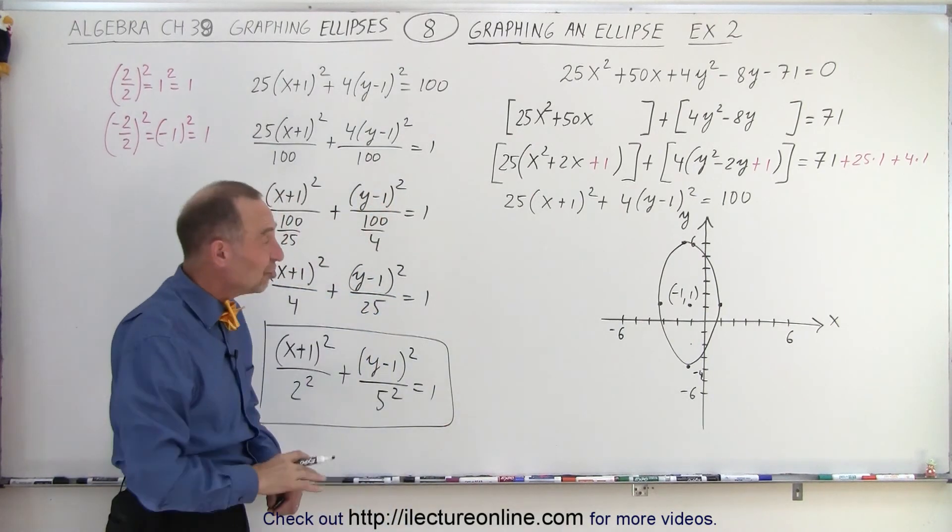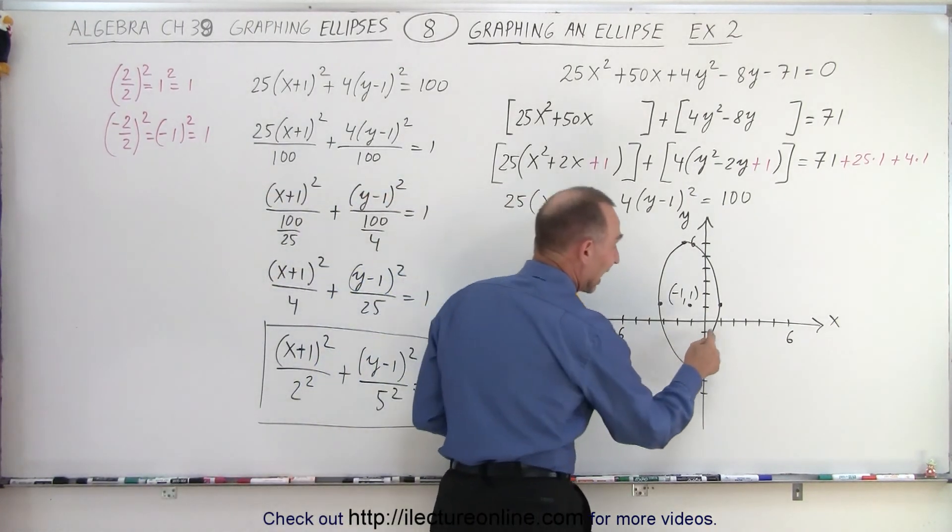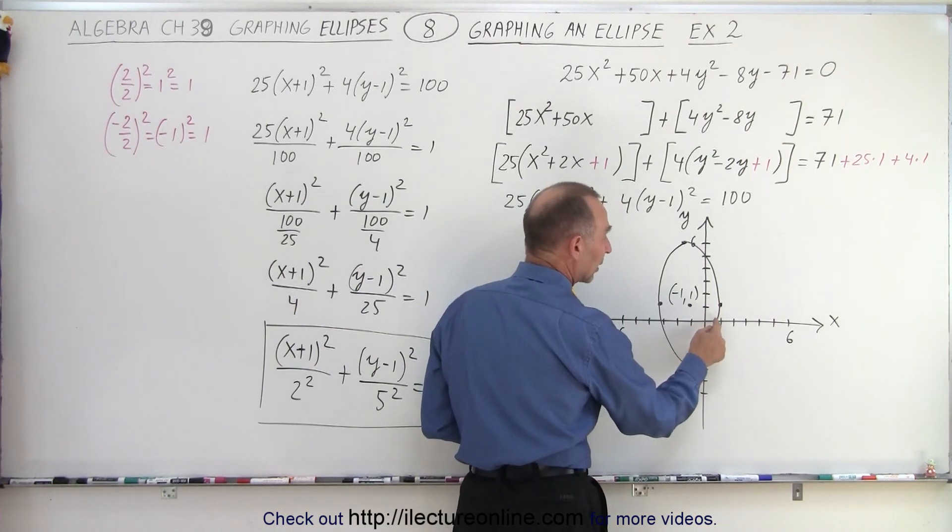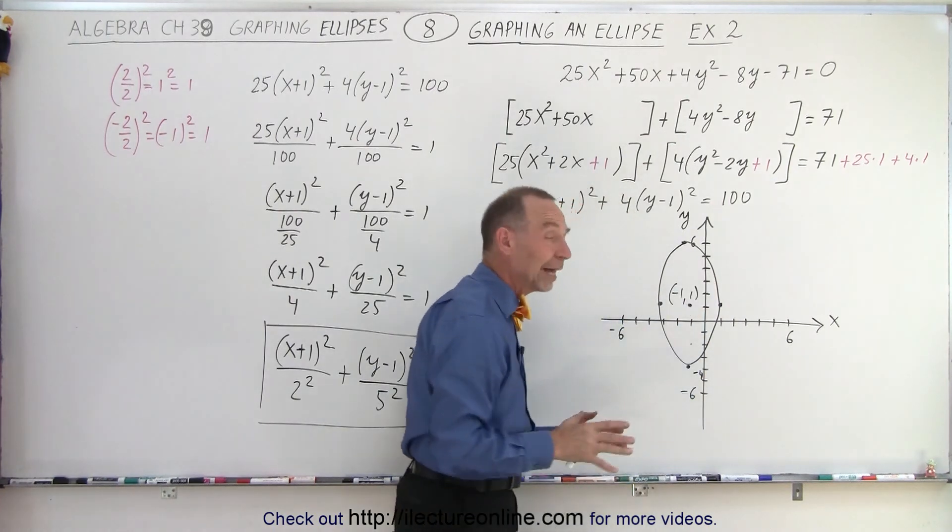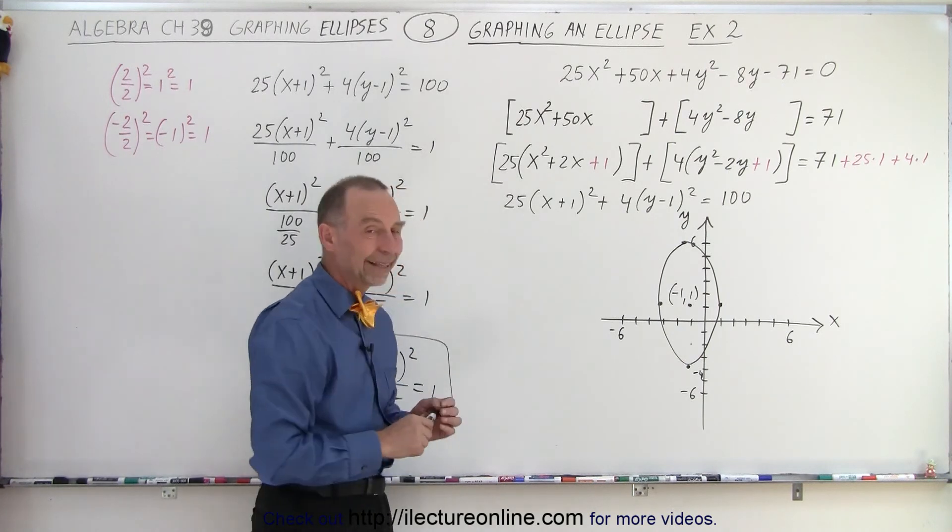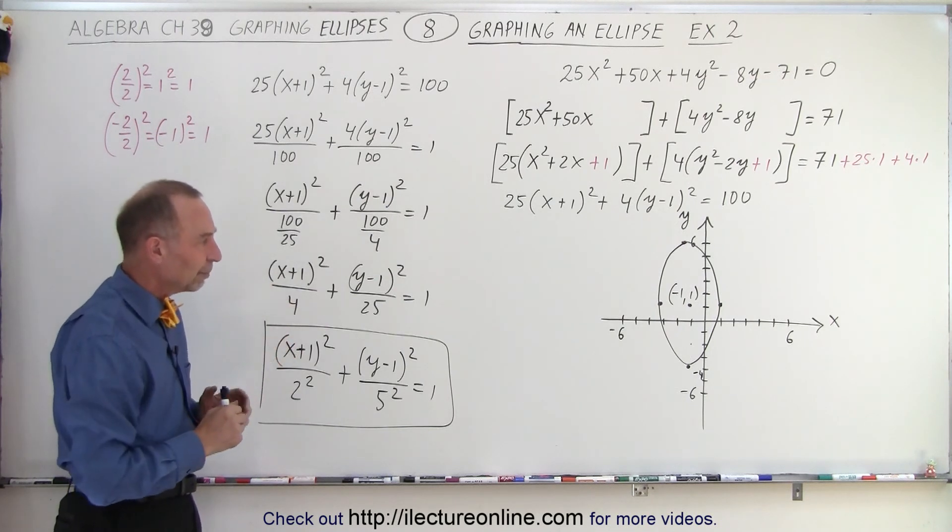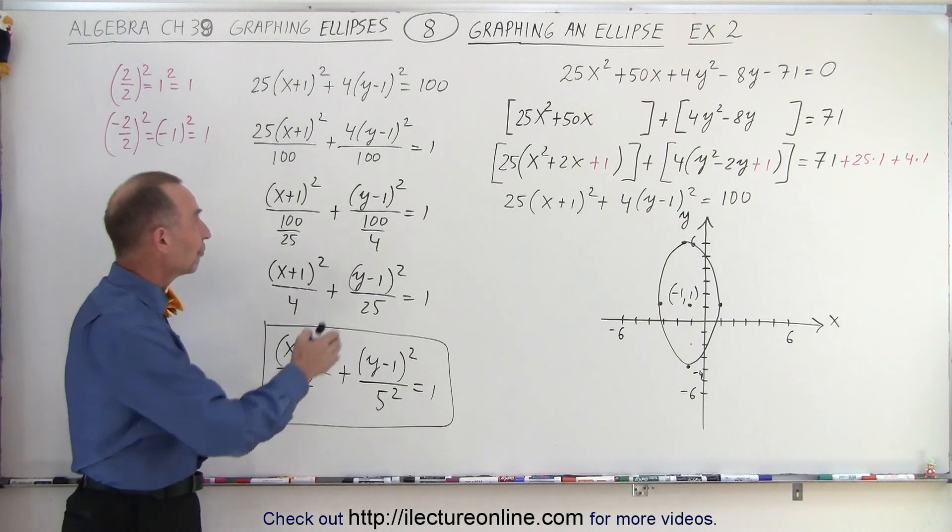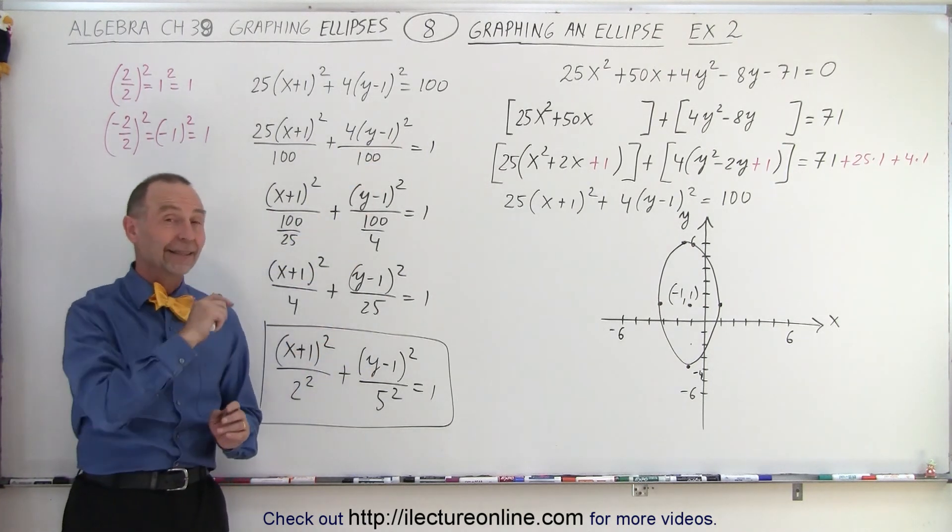Notice that we just graphed a general ellipse. What we didn't do is find the exact location where it crosses the x-axis here and here, or the exact points where it crosses the y-axis there and there. To do that, we need to do some other things, and we'll do that at a later time. But here we simply wanted to show you the general equation of an ellipse, how to graph it, how the equation is derived, and how to go from a form like this into a form that can easily be graphed.